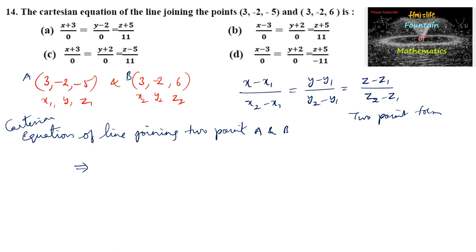x minus x1, that is x minus 3 upon x2 minus x1, that is 3 minus 3, equals y minus of minus 2 upon minus 2 minus of minus 2, equals z minus of minus 5 upon 6 minus of minus 5.